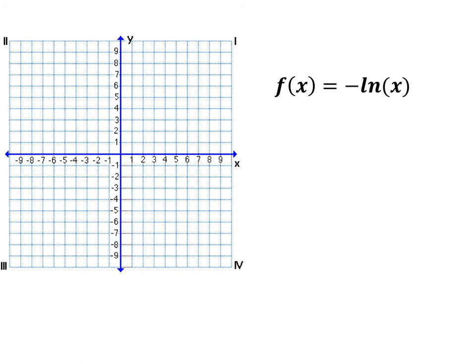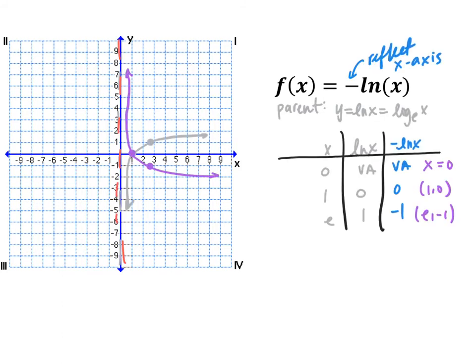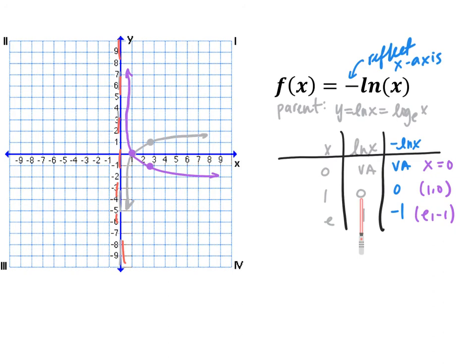Graph f(x) equals negative natural log of x using transformations. The parent function is y equals ln(x), or log base e of x, with vertical asymptote x=0 and points (1,0) and (e,1). This function is reflected across the x-axis. The vertical asymptote stays at x equals 0, the point (1,0) stays at (1,0) since it sits on the x-axis, and the point (e,1) reflects to (e, negative 1). Since e is about 2.7, we can plot these points and the vertical asymptote.